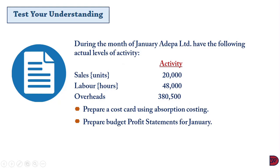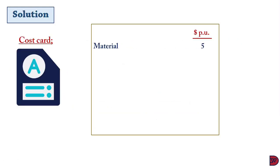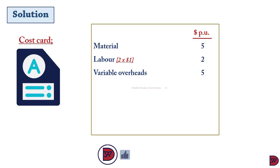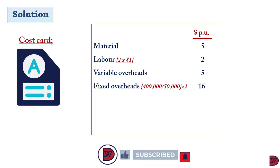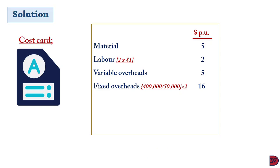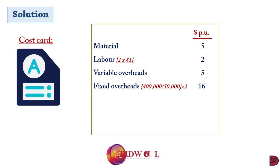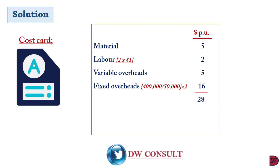For the solution, the cost card: direct material is five dollars; direct labor is two hours at one dollar per hour giving two dollars; variable overhead is five dollars. For fixed overhead, four hundred thousand dollars divided by fifty thousand hours gives an absorption rate of eight dollars per hour. Since it is a service business we absorb based on labor hours; two labor hours per service at eight dollars gives sixteen dollars. Total cost is twenty-eight dollars per service.